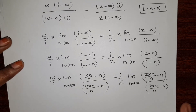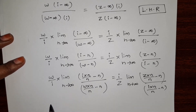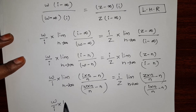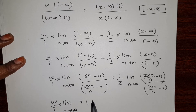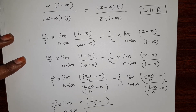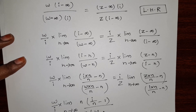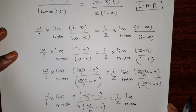Now all terms have n, so we take n commonly outside. On taking n commonly outside, it becomes (i divided by n minus 1) divided by (w divided by n minus 1), times i by z, times the limit as n tends to infinity.